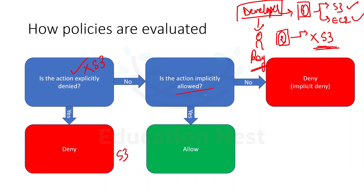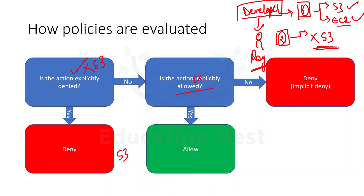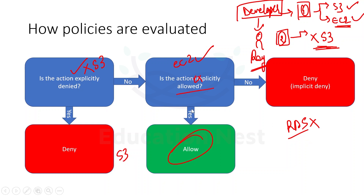Next, is the action explicitly allowed? For EC2, yes — it is explicitly allowed at the group level, so Roy can access EC2 instances and the final result would be allowed. For any other service like RDS, there is no explicit allow, so implicitly it would be denied. This is how policies are evaluated.